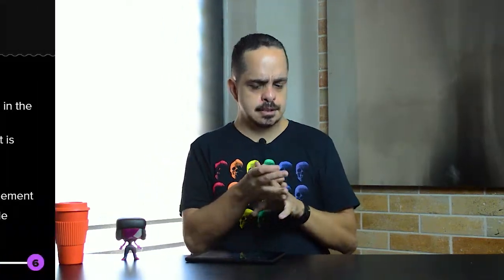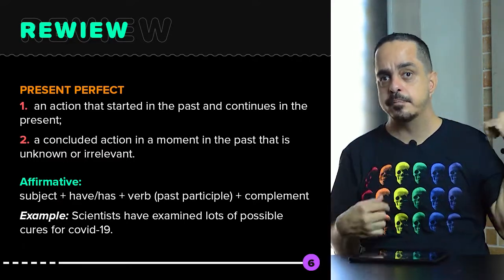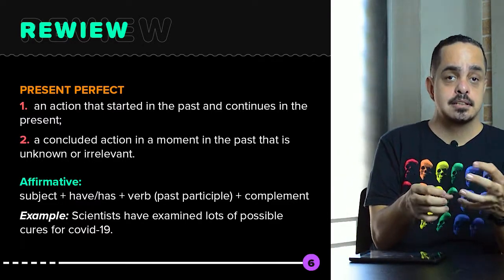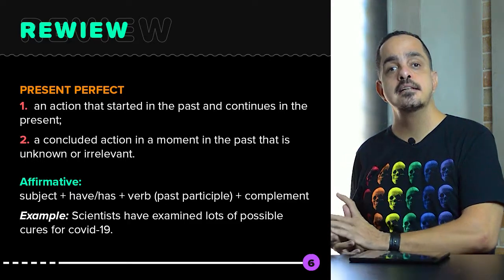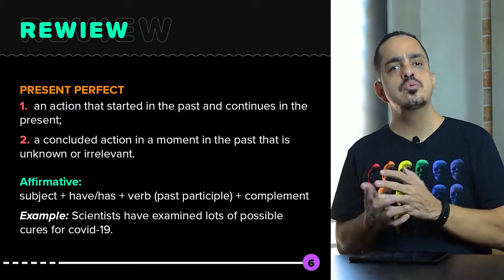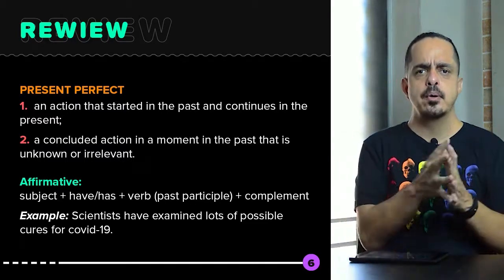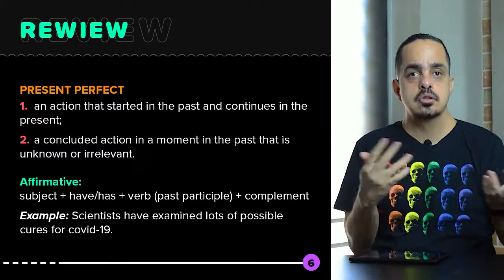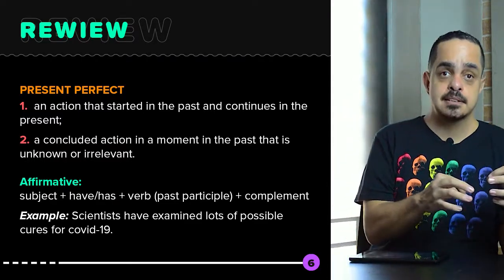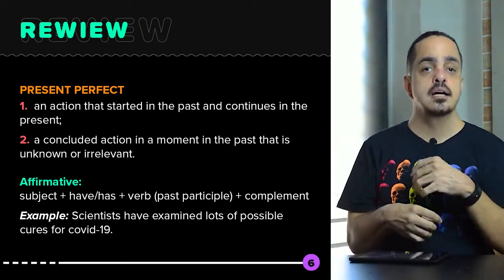What is present perfect? It has two very important ideas. It can mention an action that started in the past and is still happening in the present. But most importantly, it can mention an action that is concluded in the past, in a moment that we don't know or that is irrelevant. So you can ask me, what is the difference between this and simple past? That is also about concluded actions in the past. Simple past will mention a specific moment. Present perfect will mention moments that are irrelevant or unknown.